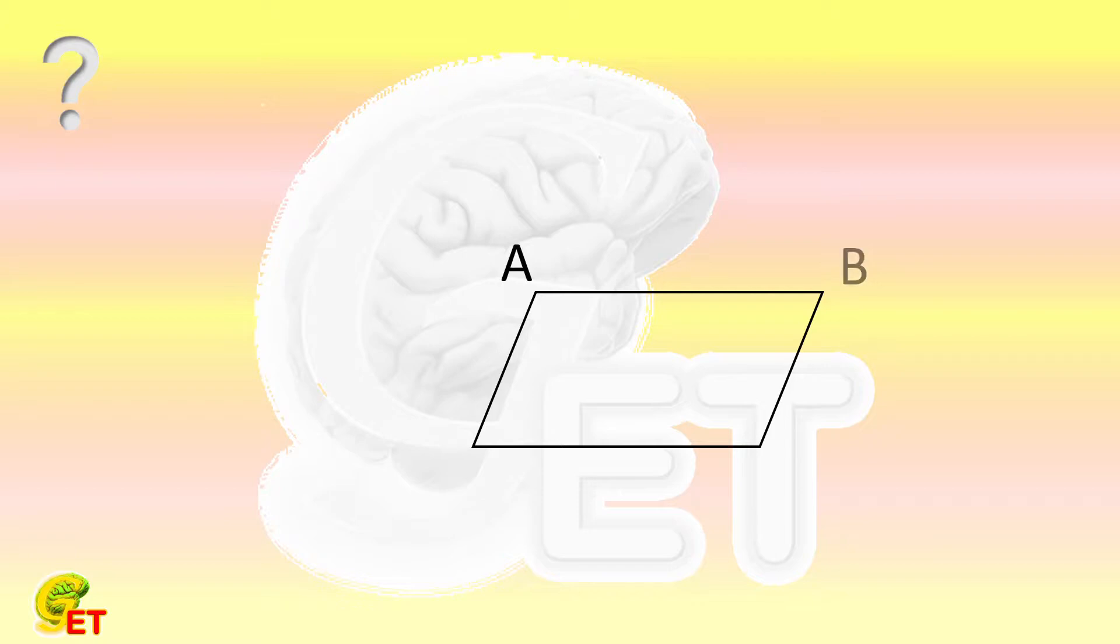There is a parallelogram ABCD. Angle D is acute. The length of AB is longer than that of BC.